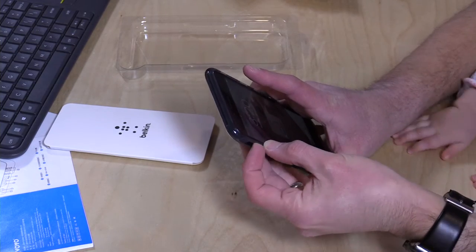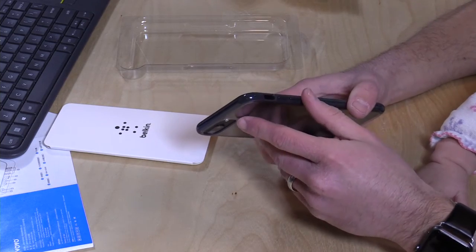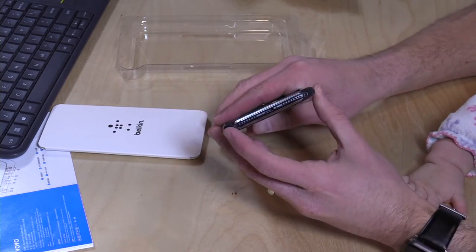The rocker switch here for the ringer is hard to get at. So you really have to kind of get your fingernail in there to get that switch switched properly because it is kind of recessed in there.